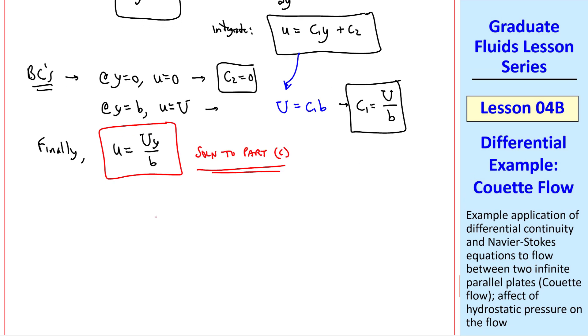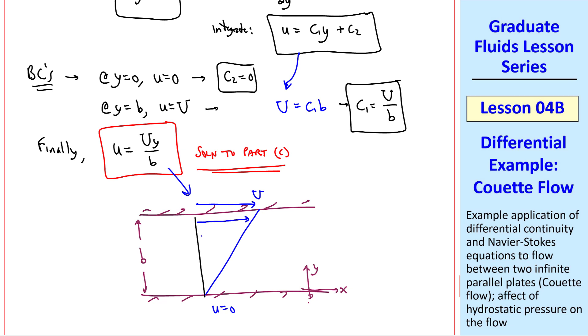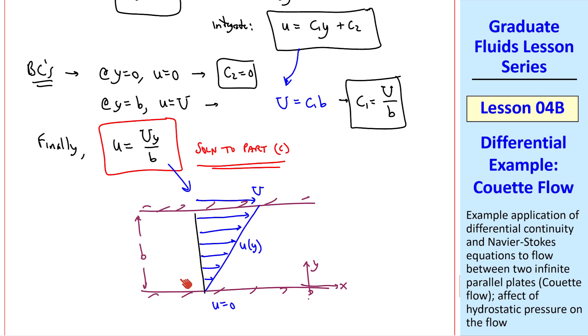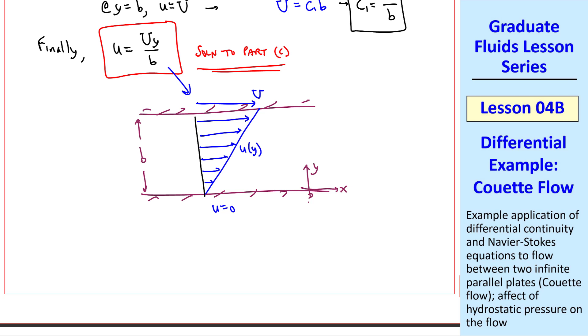What does this flow look like? Well here's our two walls and our x and y coordinates. The upper plate is moving at speed U, and the bottom plate is stationary, and this equation is simply linear. So u of y increases linearly from zero to capital U across this gap.